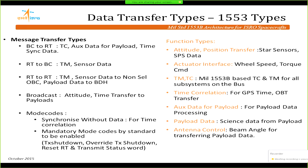The 1553 has different data transfer types: bus controller to remote terminal, remote terminal to bus controller, remote terminal to remote terminal, and broadcast. All these have been employed for sending auxiliary data, tensor data, and keeping the non-selected system updated. Mode codes for time synchronization — synchronized without data — are also employed, with mandatory mode codes provided in the architecture.